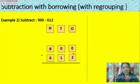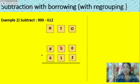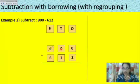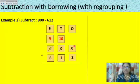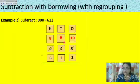Let us start solving from the ones place. In the ones place it is zero — can you subtract 2 from zero? No. But if you look at the tens place, it is also zero. So the tens place must first borrow from the hundreds place, then the tens place can give to the ones place. After borrowing from the hundreds place, the tens place gets 10. How much is left in the hundreds place? 8. Don't forget to write that.